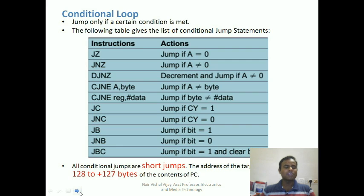Similarly, Compare Jump Not Equal compares the content of the accumulator or a register with a byte or immediate data, and jumps to the relative address location provided the content of the accumulator or register is not equal to the immediate data or content of any register. You also have Jump Carry, Jump No Carry, and jump if a particular bit is set or reset. All these are different conditions on which a conditional jump takes place.